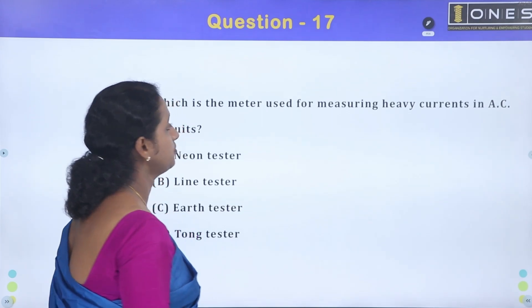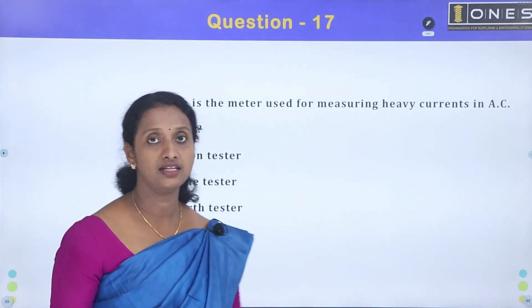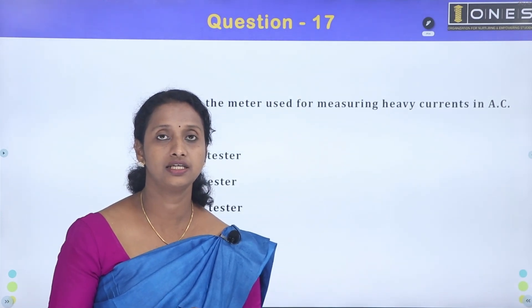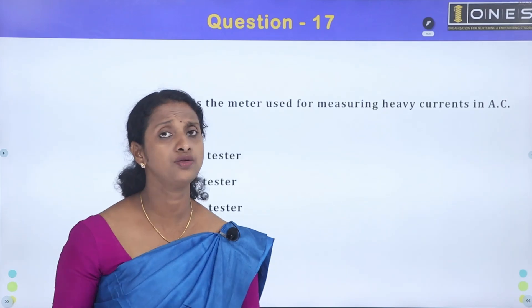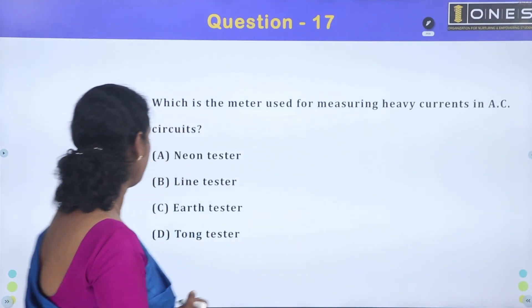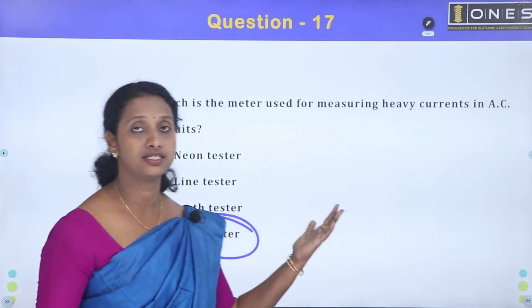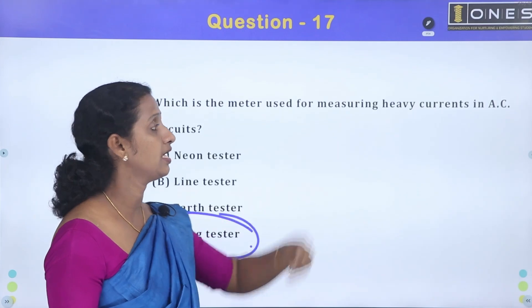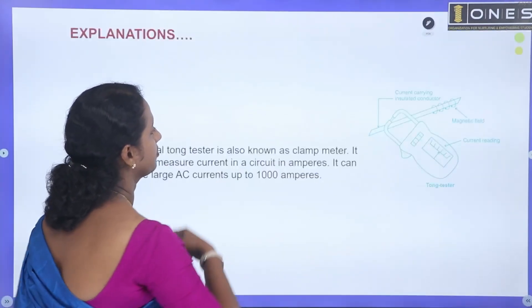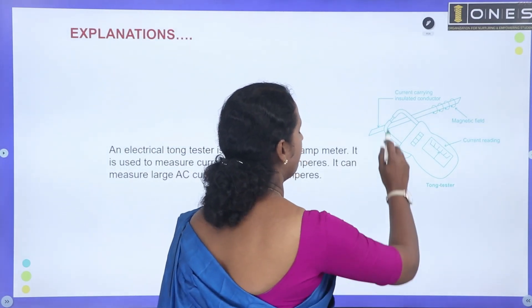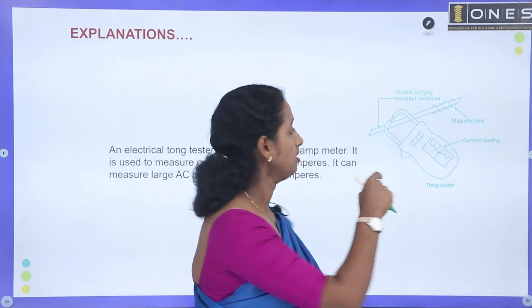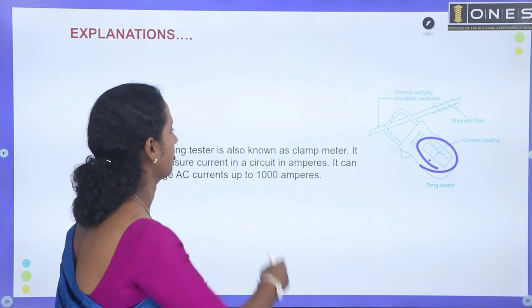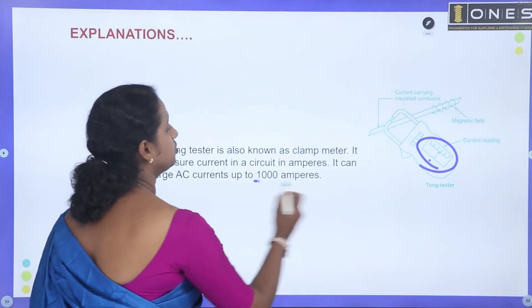Next: which meter is used for measuring heavy current in an AC circuit? For example, if we have to measure up to 10A or 15A range, that is a very large current. We use a tong tester (clamp meter). This is an optional device used for measuring heavy current in AC. It can measure large AC current up to 1000 amperes.